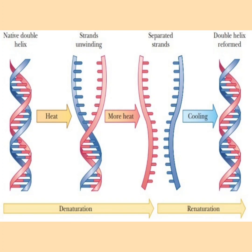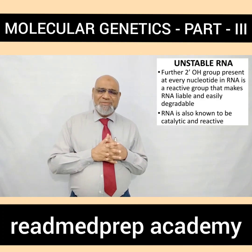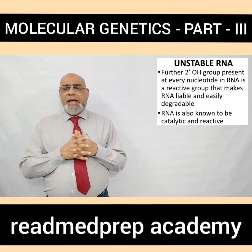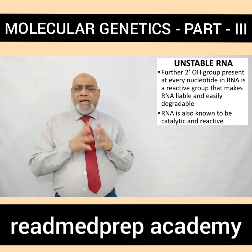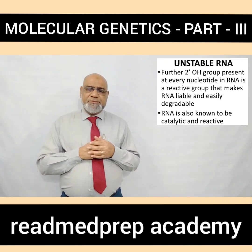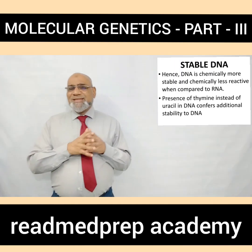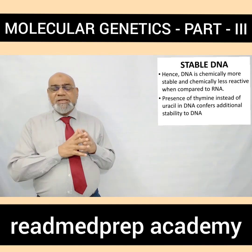A double helix DNA molecule on heating slowly unwinds, and when more heat is provided, the two strands separate. When cooling is done, the strands wind again and form the double helix structure by renaturation. RNA is unstable because of the 2'-hydroxyl group present at every nucleotide, which is a reactive group that makes RNA labile and easily degradable. RNA is also known to be catalytic and reactive. DNA is chemically stable and less reactive when compared to RNA.